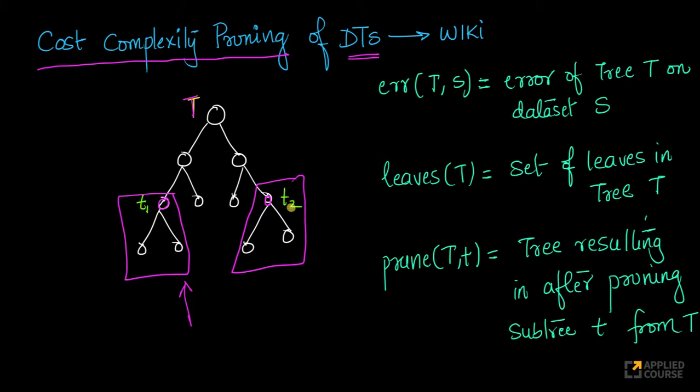Now, the question here is, imagine as part of cost complexity pruning, you're trying to reduce the number of leaf nodes because you have this alpha hyperparameter that you tune. Now, imagine which of these two will you actually now remove? I'm going to follow the notation and equations from Wikipedia because it's one of the simplest explanations that I've seen.